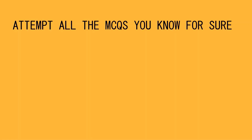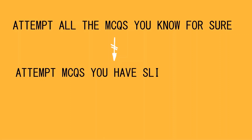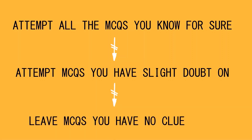My plan of attempting all standardized tests which entail MCQs is that I firstly attempt all MCQs that I am completely sure about, based on whatever knowledge I have gained over the past years. Then I attempt MCQs that I have slight doubt on but can make a good guess of. And lastly, I leave out all MCQs I have absolutely no clue about. Don't be surprised if you see such MCQs on the exam, because you cannot cover everything for standardized exams, and neither do you need to.